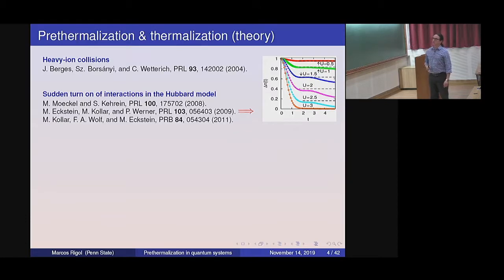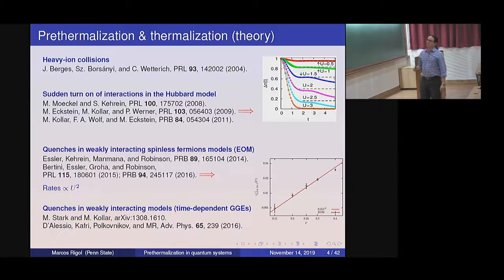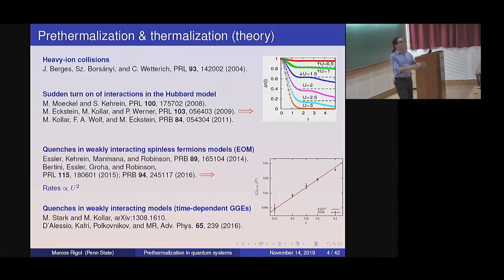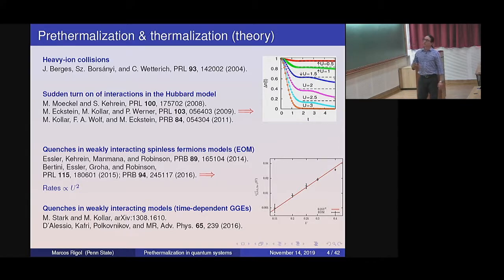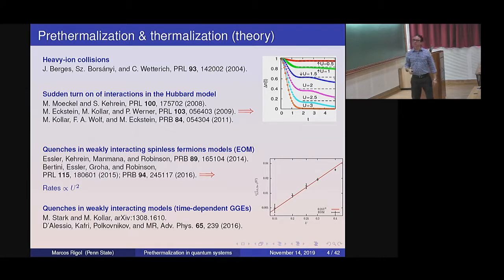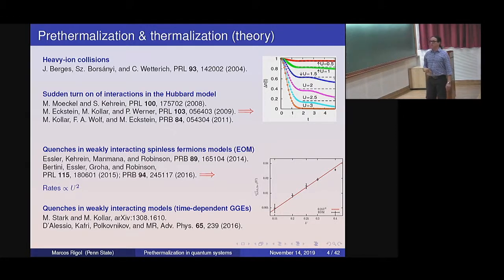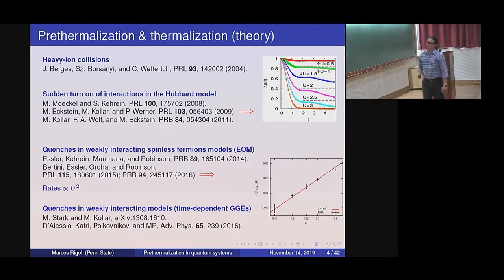The picture I'm going to discuss in this lecture is going to be slightly different. This has been studied in many different systems using heavy techniques to study breaking integrability weakly. The usual starting unperturbed Hamiltonians people have looked at are non-interacting Fermi systems. Using equation of motion techniques, they studied what happens when you turn on weak interactions — the result being relaxation rates versus U that fit well with something like U-squared, which should bring to mind Fermi-Golden rule.